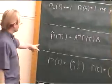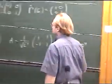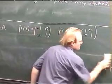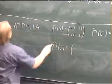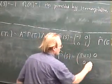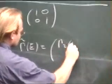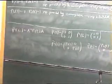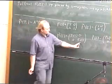Our representation gamma tilde has got a very interesting structure. Gamma tilde of S is equal to — we've got a minus 1 there, but minus 1 is just gamma 2 of S. And gamma tilde of E is equal to gamma 2 of E, 0, 0, gamma 1 of E. So these matrices look block diagonal, and what we've got appearing in corresponding blocks are the matrices from a certain representation and from a different representation.